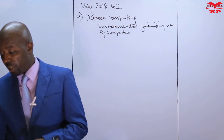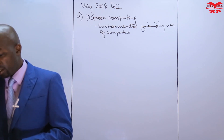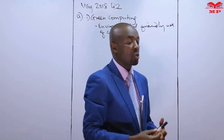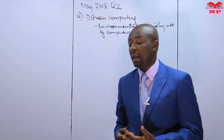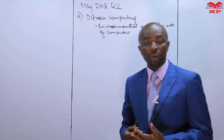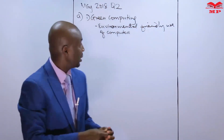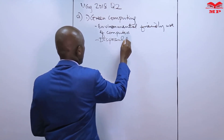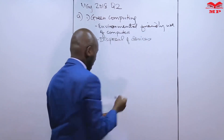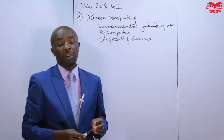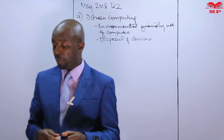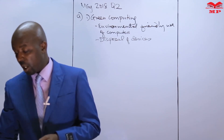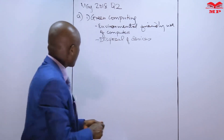Another way of describing green computing talks about disposing of computing devices to reduce environmental effect. It can also mean the disposal of computing devices in a manner that will reduce their effect on the environment. A candidate who mentions disposal of devices — environmentally friendly disposal of devices — is supposed to get that particular point. Any definition given on green computing would give the candidate two marks.